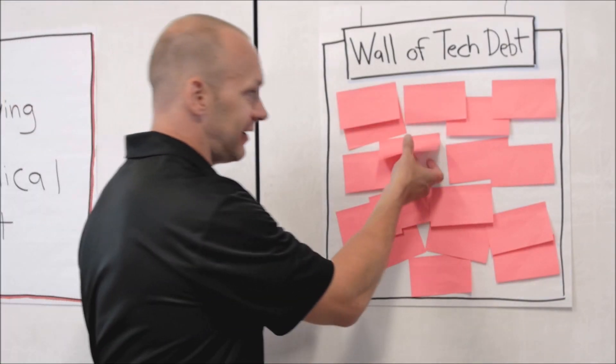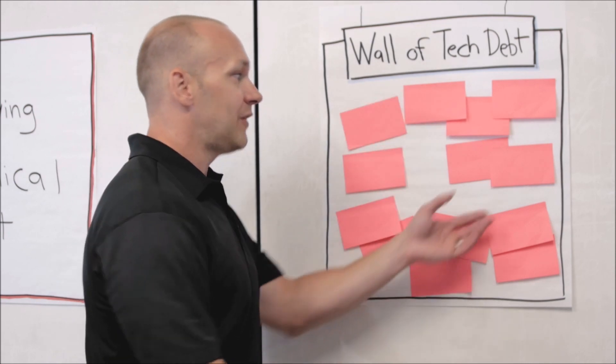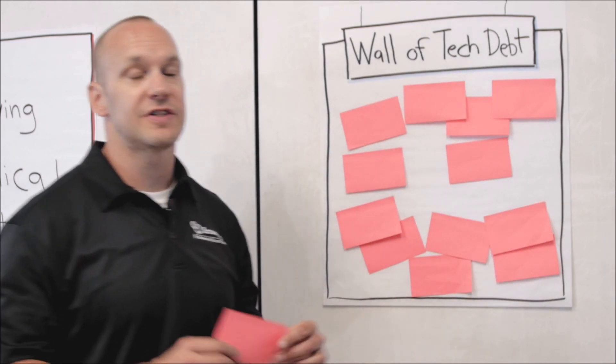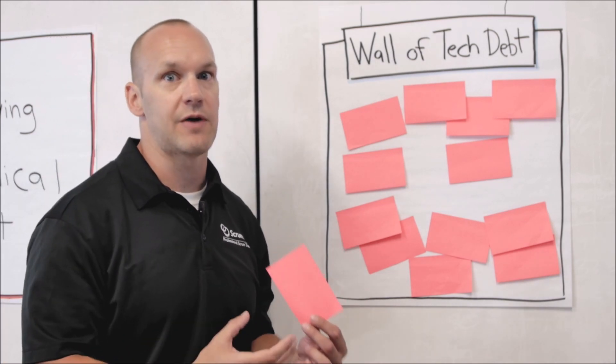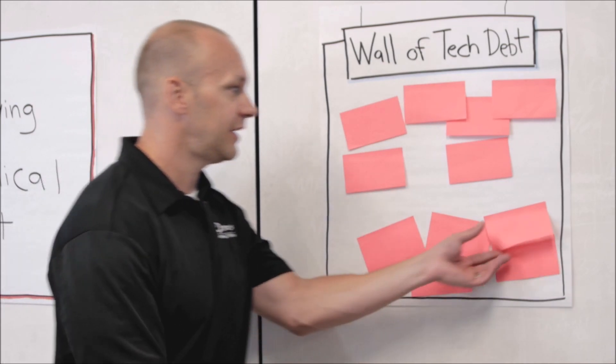So by incrementally eliminating this technical debt, while still delivering business value, I want to make sure I mentioned that we weren't just taking sprint by sprint to eliminate technical debt. We were still adding business value. We were still delivering features in production. We were incrementally eliminating this.